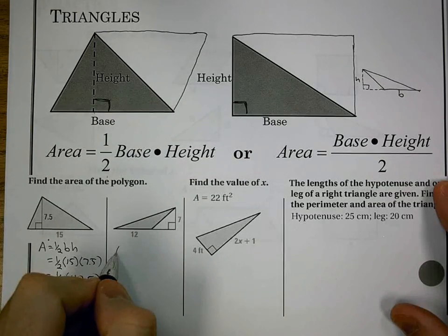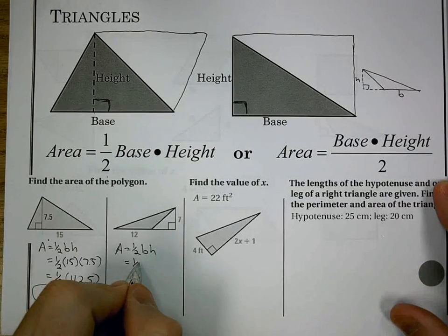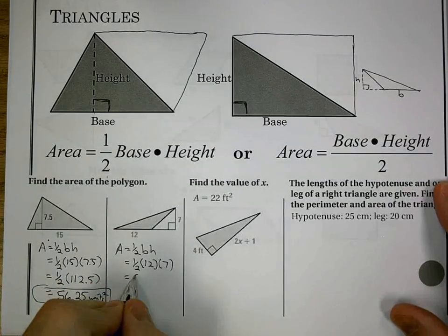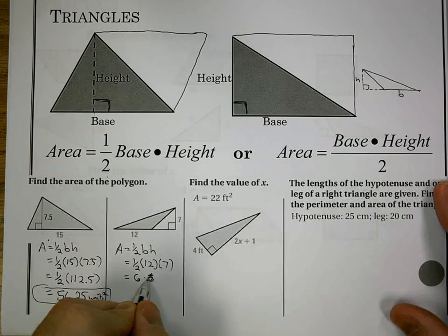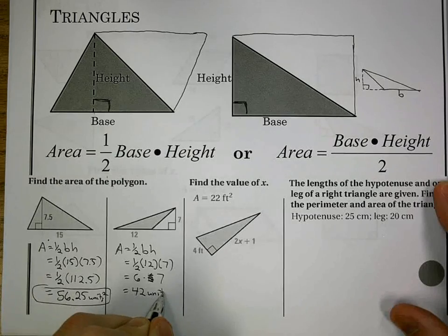Next problem. Area equals 1 half base times height. 1 half 12 times 7. Take half of 12, I get 6 times 7. And that is 42 units squared.